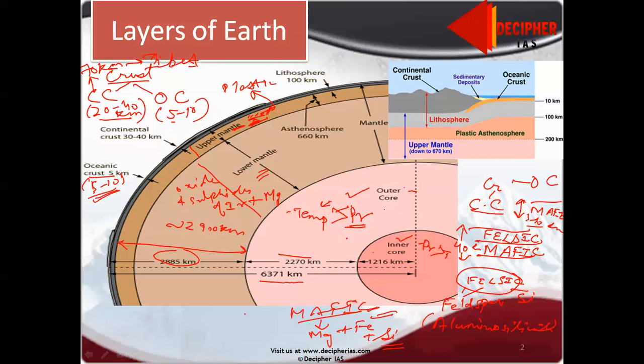Coming to the other classification for plate tectonics theory. Continental crust is much thicker than oceanic crust which is 5 to 10 kilometers. After 40 kilometers, if you go till 100 kilometers, you get lithosphere. Lithosphere comprises crust plus some part of upper mantle, till 100 kilometers.